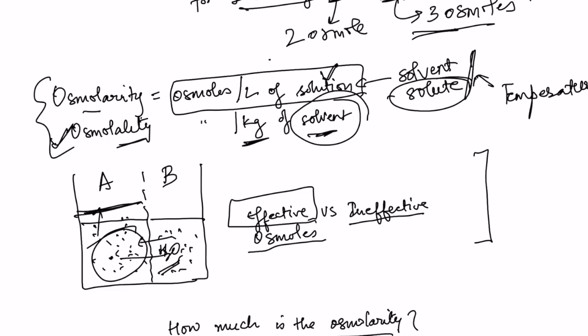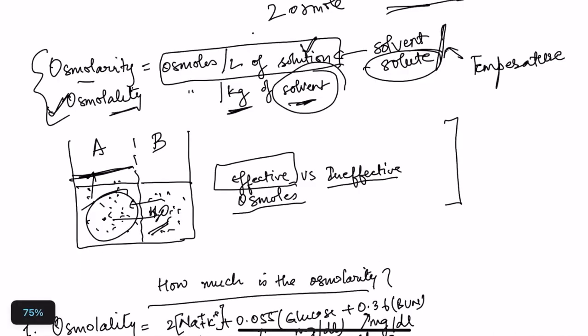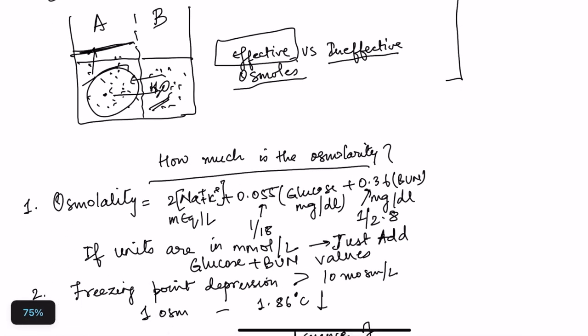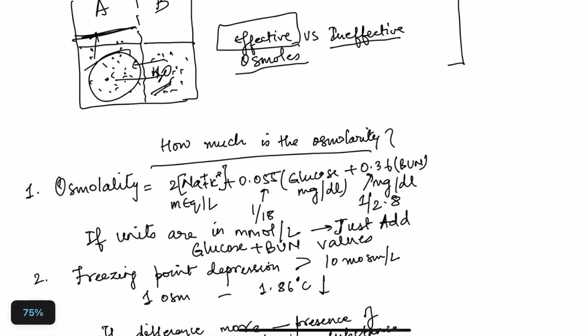How do we calculate osmolarity? There are two mechanisms. One is by freezing point depression, which is the most accurate method. One osmol of solute causes depression of the solution's freezing point by 1.86°C. By noting how much depression in freezing point has occurred, we can determine the osmoles.